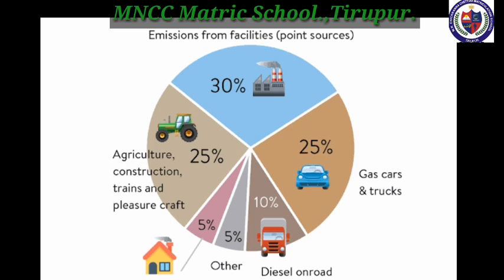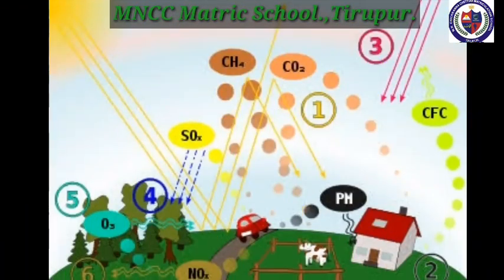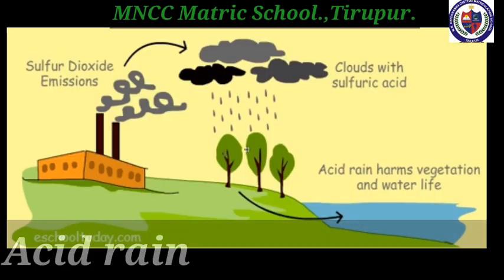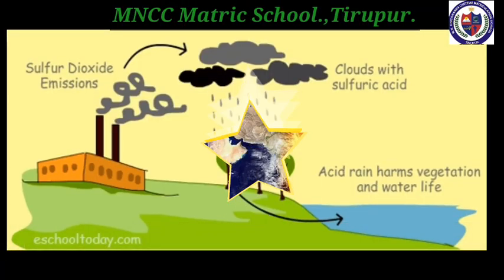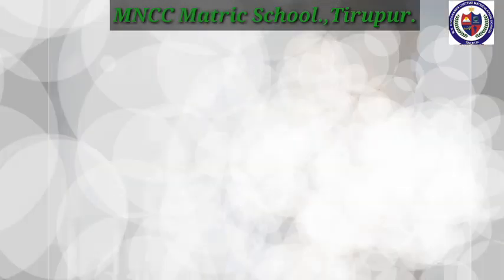Chemical substances responsible for air pollution include carbon dioxide, carbon monoxide, oxides of sulphur, oxides of nitrogen, chlorofluorocarbons, and methane. The effects of air pollution are: number one, acid rain; number two, global warming; number three, respiratory problems.